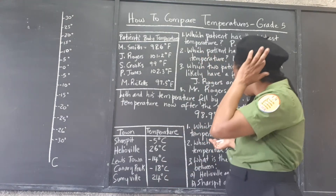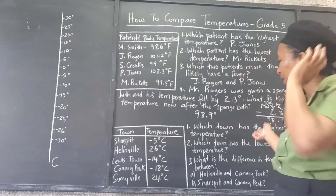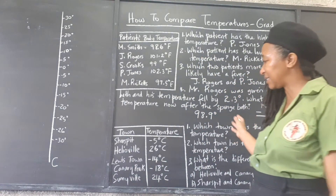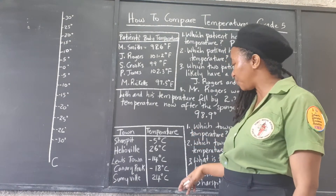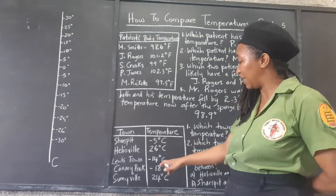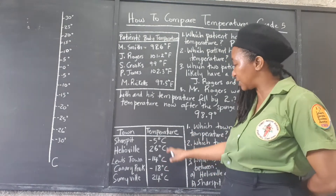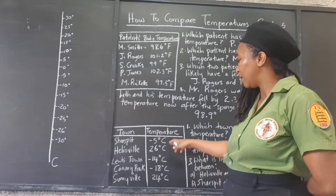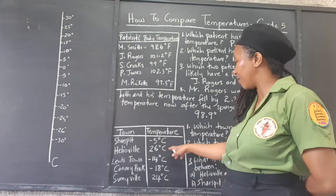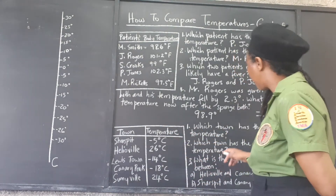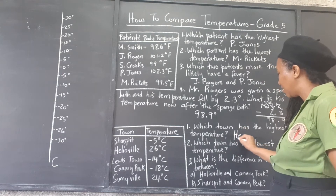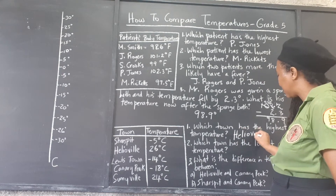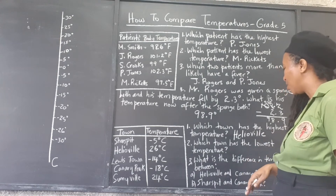Which town has the highest temperature? That would be the biggest number. Remember, negative numbers are smaller. The biggest number here is 26 degrees, and that is Helio Vale. So Helio Vale has the highest temperature.